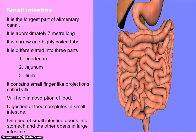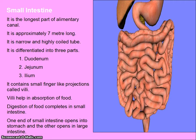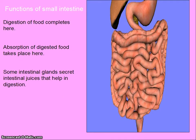Small intestine is the longest part of elementary canal, approximately 7 meters long. It is a narrow and highly coiled tube, differentiated into three parts: duodenum, jejunum and ileum. It contains small finger-like projections called villi. Villi help in absorption of food. Digestion of food completes in small intestine. One end opens into stomach and the other into large intestine. Functions: digestion of food completes here; absorption of digested food takes place here; intestinal glands secrete intestinal juices that help in digestion.